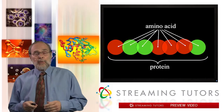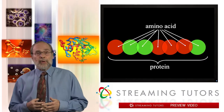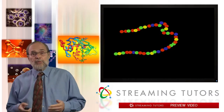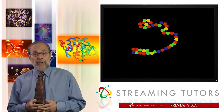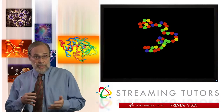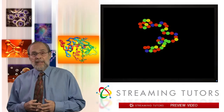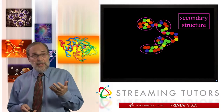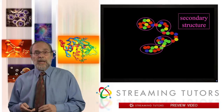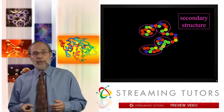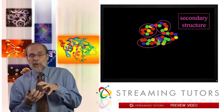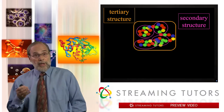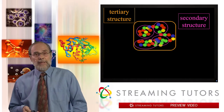Let me orient you. Remember that we're talking about protein structure here. Proteins are polymers of amino acids, and those polymers will fold up in a sequence-specific fashion. They fold up in little local domains, including things like alpha helices and beta chains that we talked about last time, and then those secondary structures fold further, intimately associating to form what we call tertiary structure. We're going to look at that today, having looked at secondary structure previously.